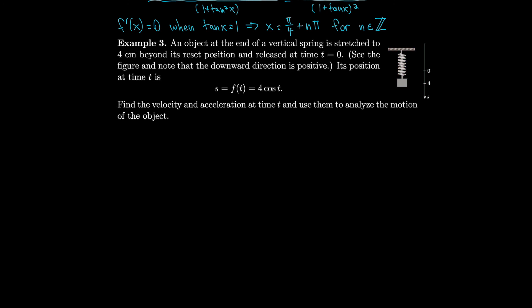An object at the end of a vertical spring is stretched 4 centimeters beyond its rest position and released at time t equals 0. Downward direction is positive. Its position is s = f(t) = 4 cos t. The velocity is the derivative of position, which is the derivative of 4 cos t, equal to 4 times the derivative of cosine t. Being careful to include the minus sign, that's minus 4 sin t.